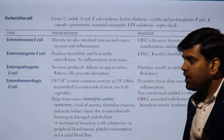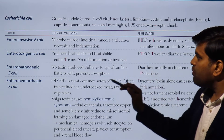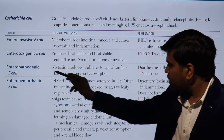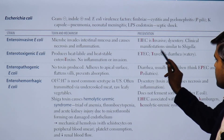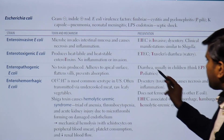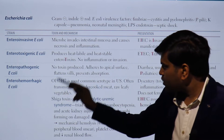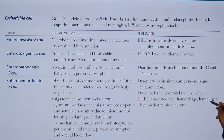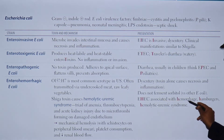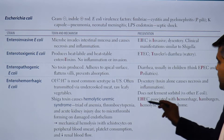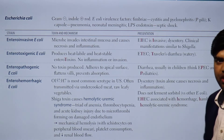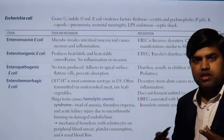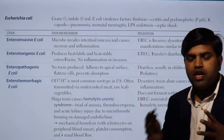You need to remember these five types of E. coli. Their names describe what disease they cause: enteroinvasive causes invasive diarrhea, enterotoxigenic causes travelers' diarrhea, enteropathogenic causes pediatric diarrhea, and enterohemorrhagic causes hemorrhagic diarrhea leading to hemolytic uremic syndrome, associated with hamburgers. Each bacteria's name tells you the disease it causes.